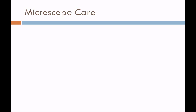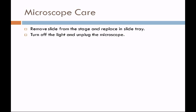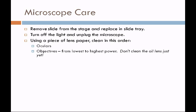When done using the microscope, it's very important to care for it properly — these microscopes cost thousands of dollars. First, remove your slide from the stage and replace it in the slide tray; if there's oil on it, remove the oil with a tissue. Turn off the light and unplug the microscope — this will extend the bulb life, as the bulbs are very expensive and difficult to change. Using a piece of lens paper, clean the microscope from the top down: start with the oculars, then the objectives from lowest to highest power — but don't clean the oil lens just yet. Next, do the condenser lens, followed by the stage. The oil lens is going to be cleaned last.